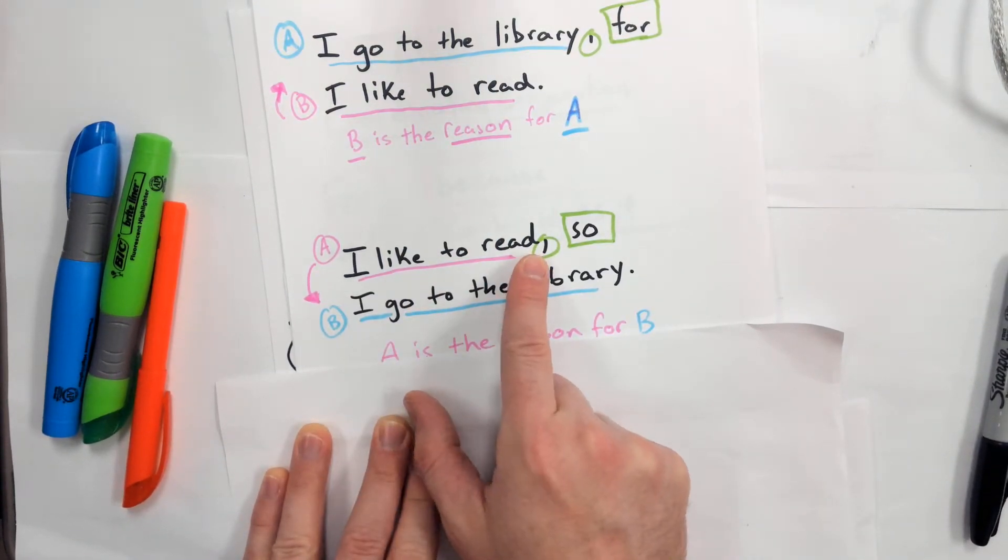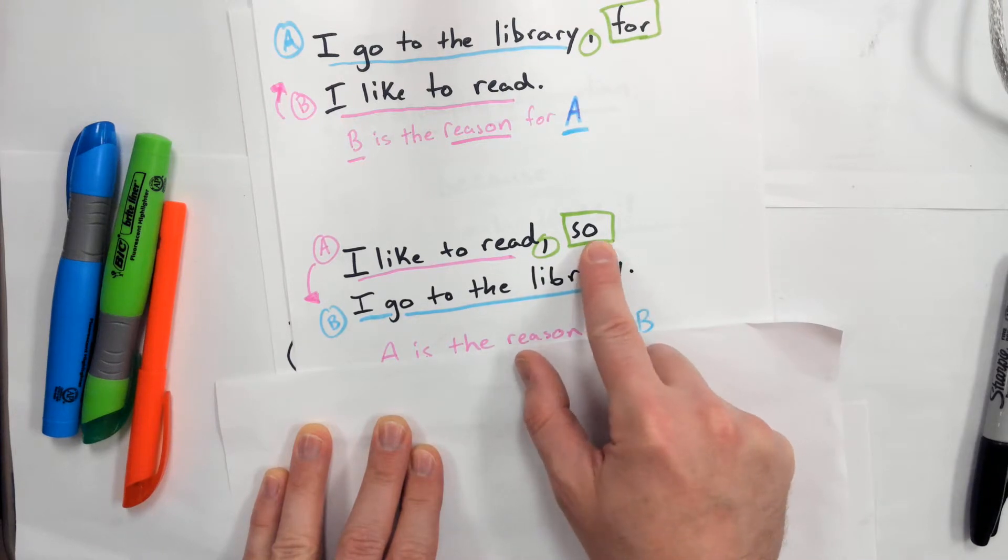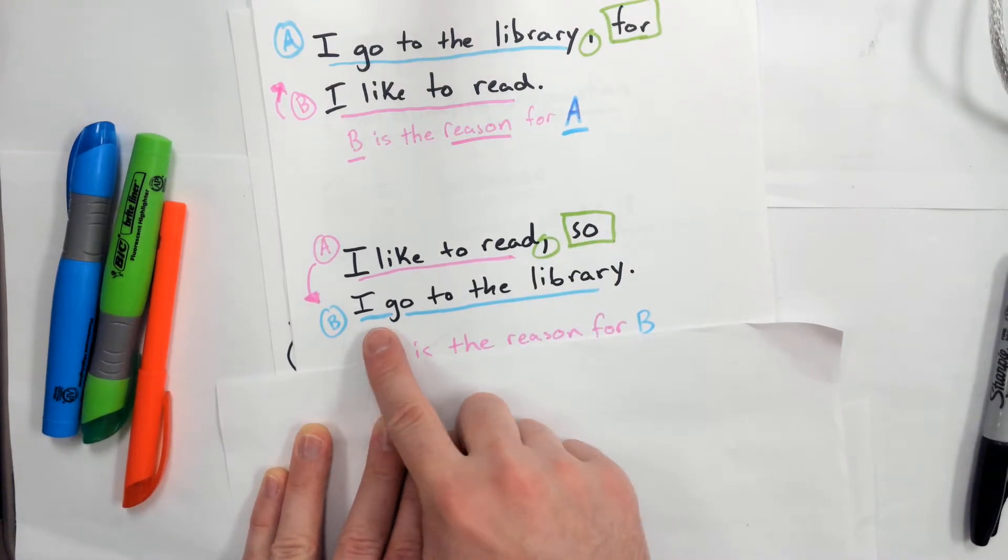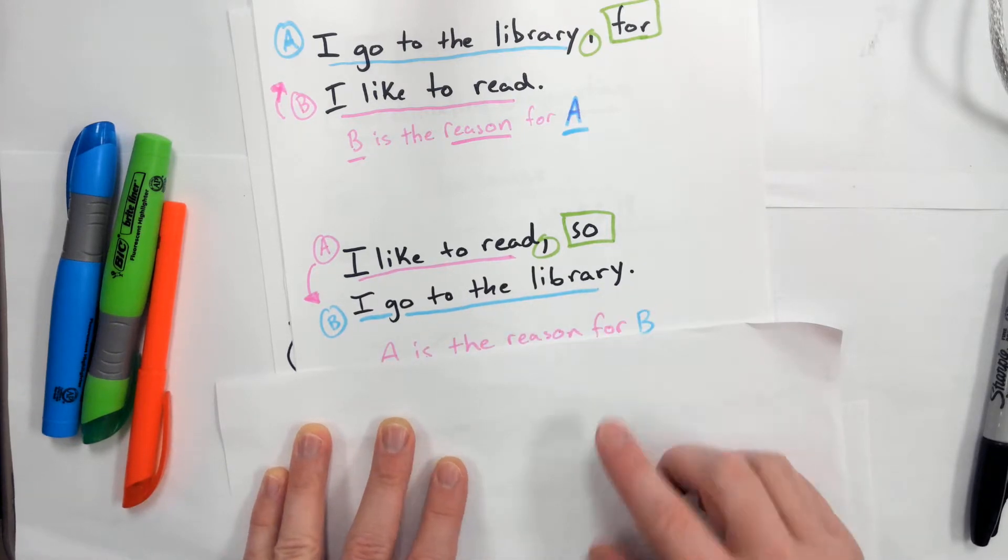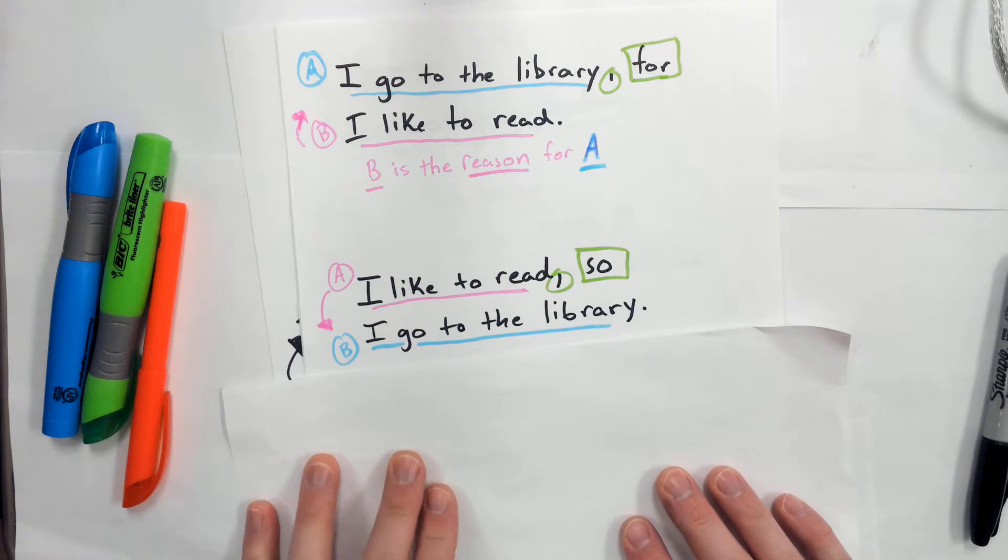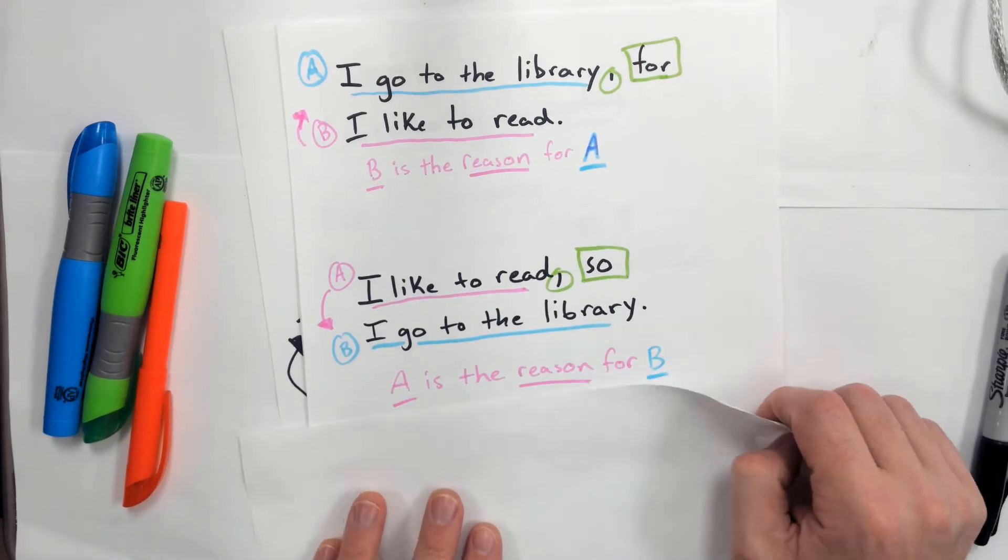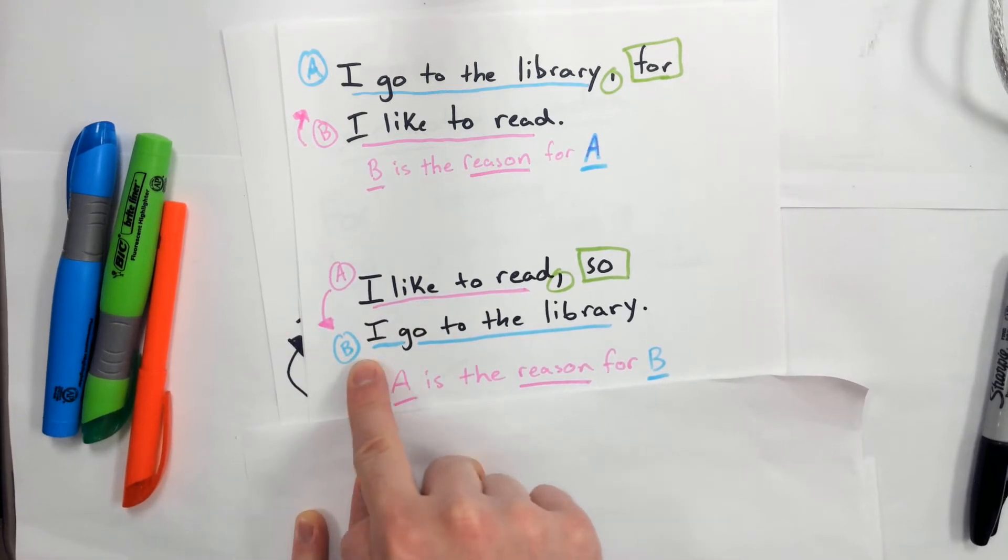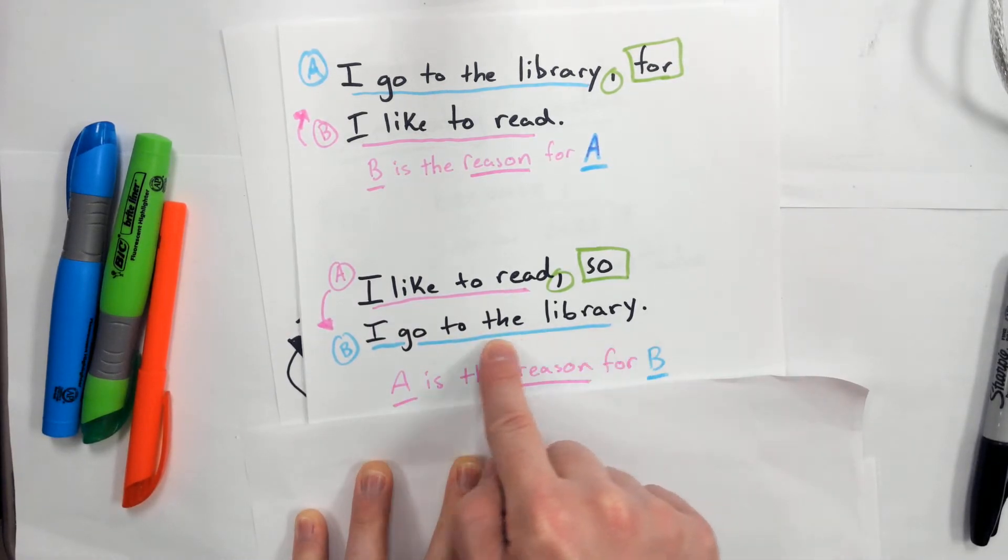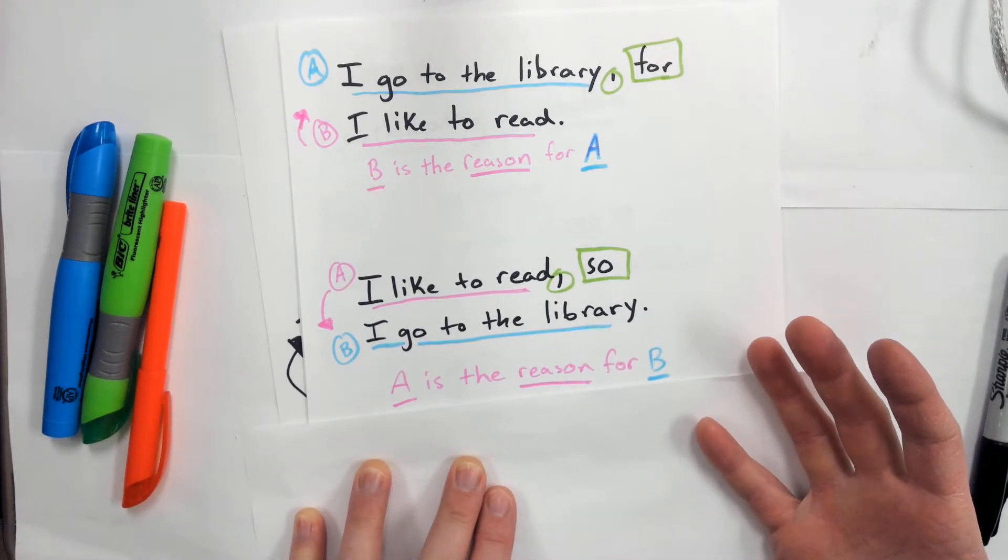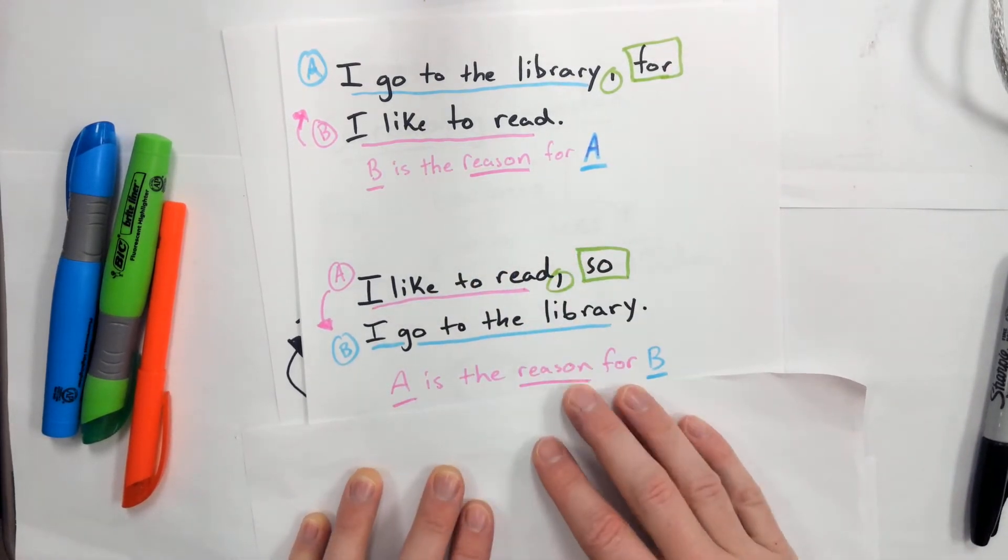It's the same exact meaning, but notice now we've changed it - the first sentence, A, is the reason for B happening. So 'for' and 'so' are pretty much the same thing; it's just they are flip-flopped.